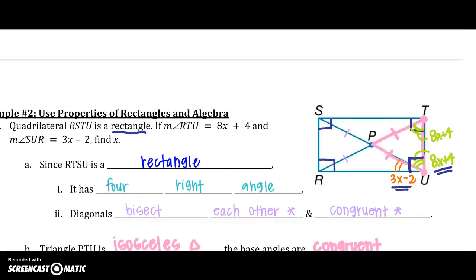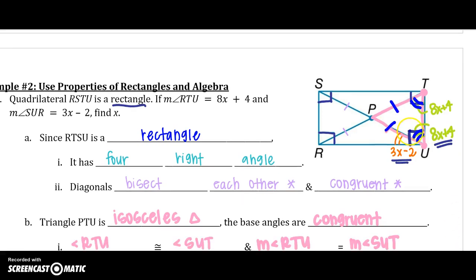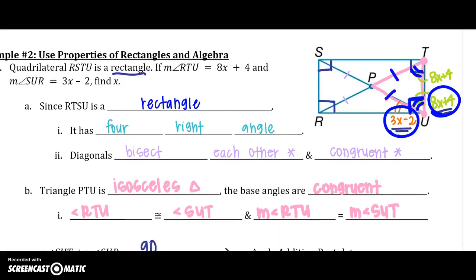And again, I can do that because I have an isosceles triangle, and whatever this angle is here, it also is represented here because of this isosceles triangle. And then I can add these two angles up to equal 90 degrees because of that right angle.